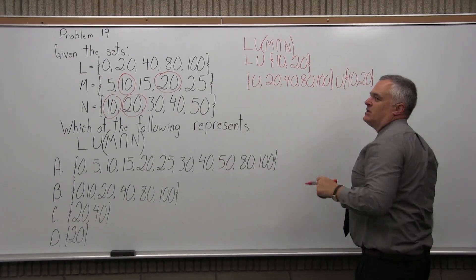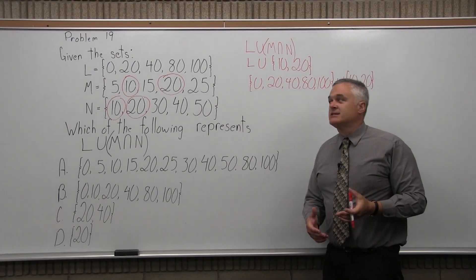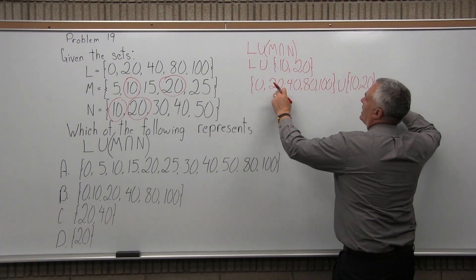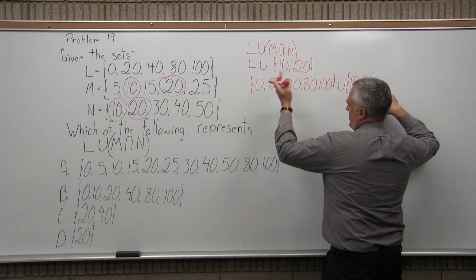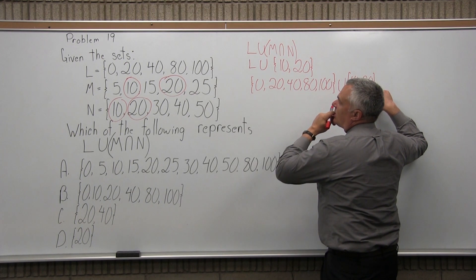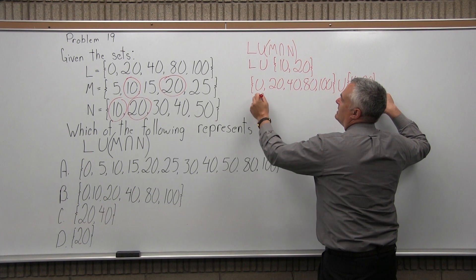So again, what does union mean? Union means join the two sets. If you have a repeat like 20, you just list it once. You don't go 20, 20.